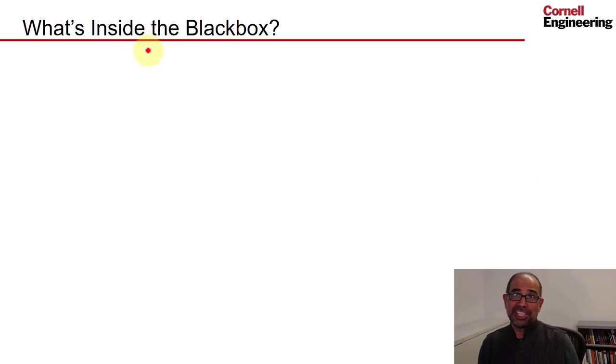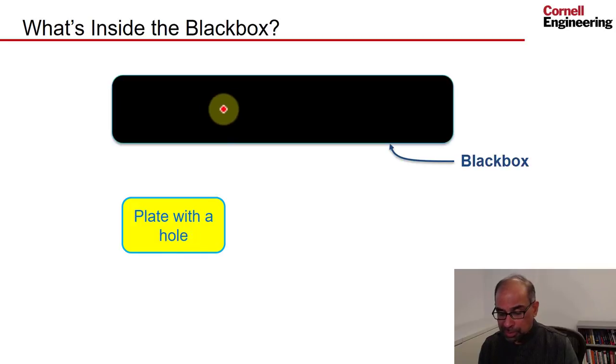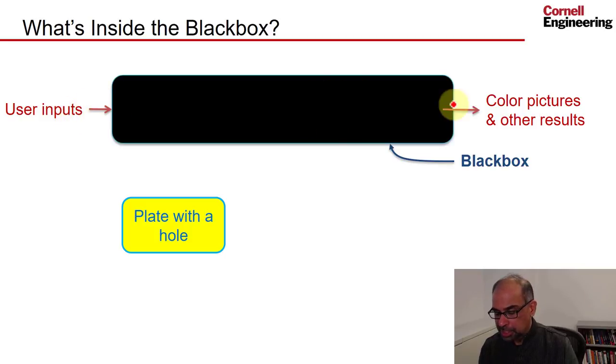Now, ANSYS, like any general-purpose finite element software, is a black box, and we'll use this black box to solve a physical problem—plate with a hole. We'll go into the black box, give it some user inputs, turn the crank, and get color pictures and other results. Of course, if we don't know what's inside the black box, this looks like garbage in, turn the crank, garbage out, as I've mentioned in other contexts.